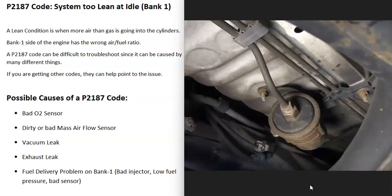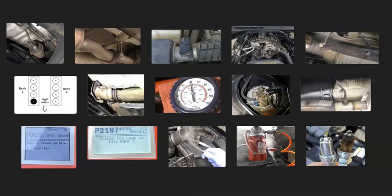That's basically it — a basic overview of how to fix a vehicle with a P2187 code. If you have anything to add, please comment below. If you have questions, ask and I'll try to answer them. If this video helped you, please like, subscribe, and have a good day.